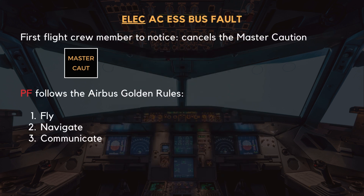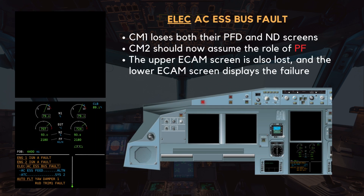The first flight crew member to notice cancels the master caution. The pilot flying should follow the Airbus golden rules of fly, navigate, and communicate. With this failure, CM1 loses both their PFD and ND screens. In this case, CM2 should now assume the role of pilot flying.